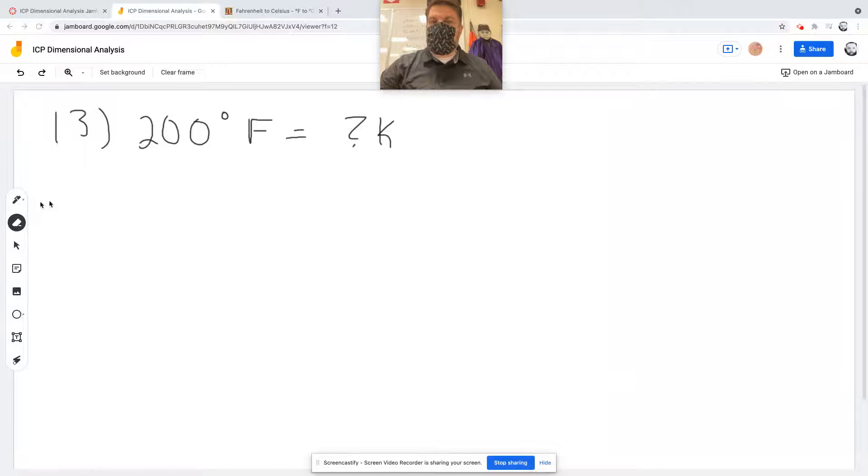Yeah, it was 273, right? So to get Kelvin, that was equal to the degrees Celsius plus 273.